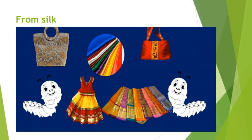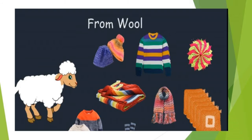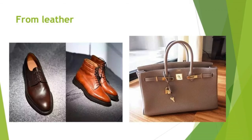Silk is the strongest natural fibre. We make many things like bags, mats and saris from these fibres. Wool keeps us warm, so sweaters, caps and socks are knitted using it. Leather is flexible, so belts, watch straps and bags are made from it.